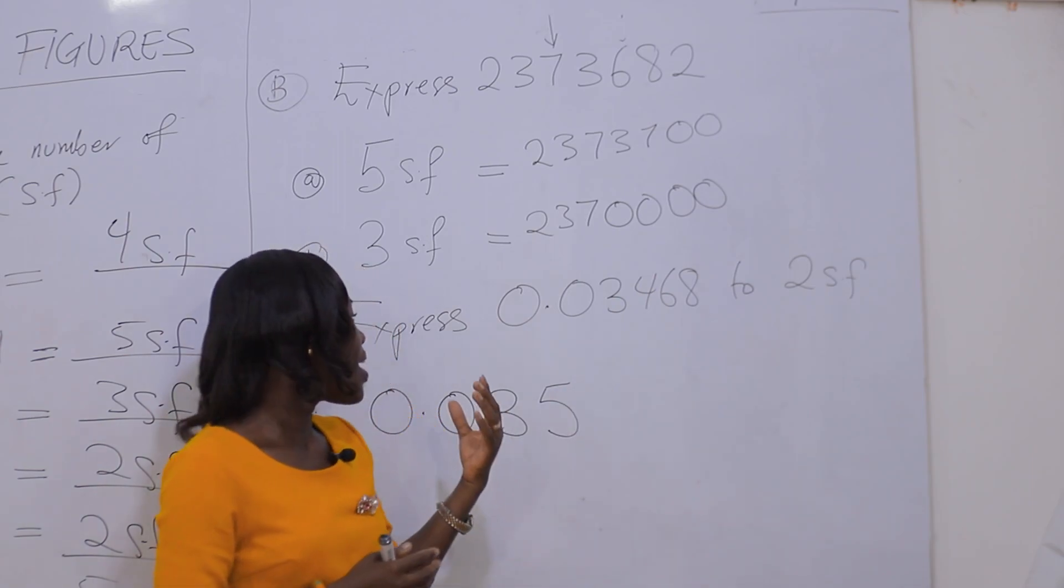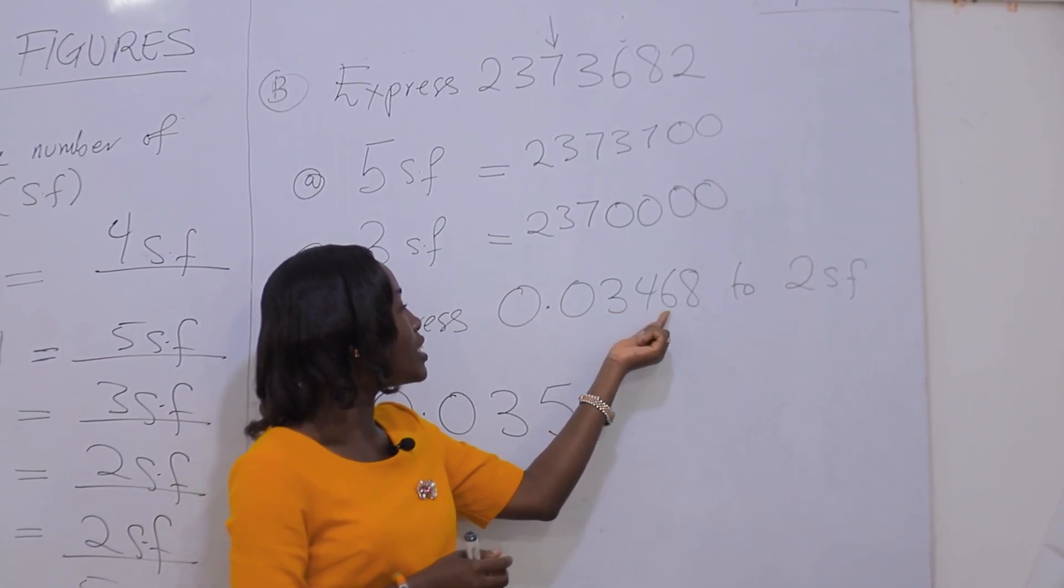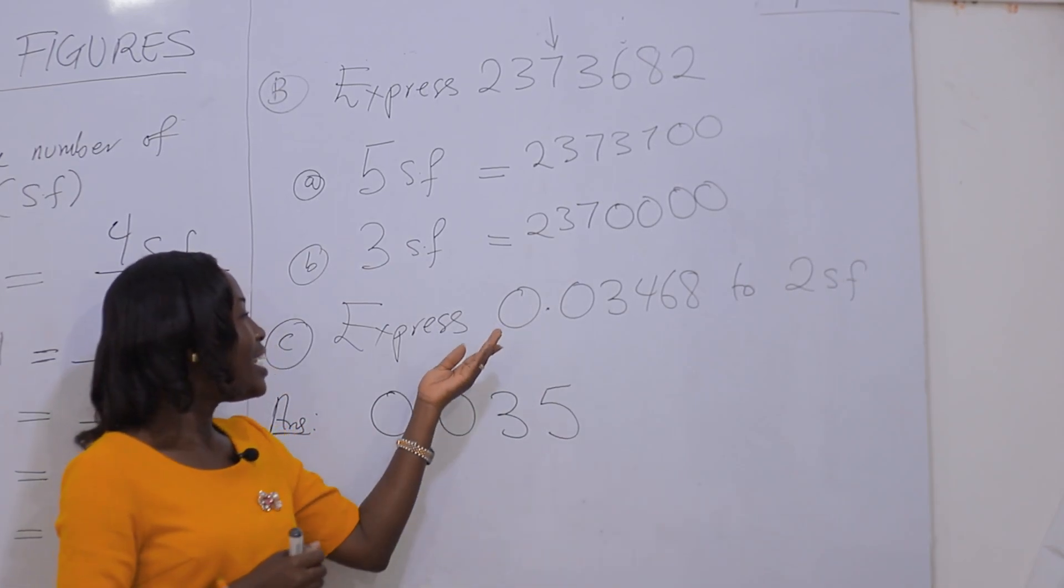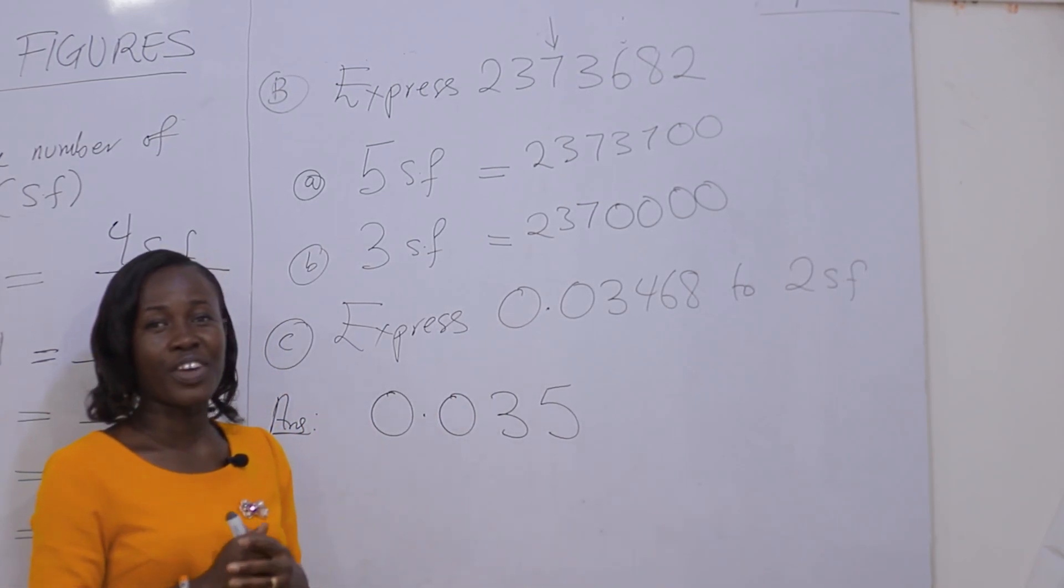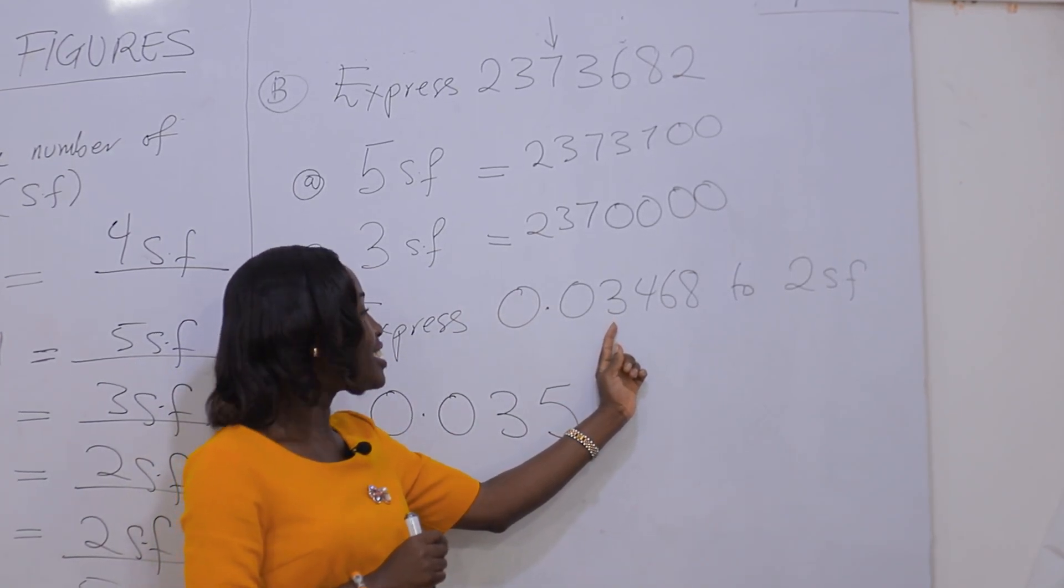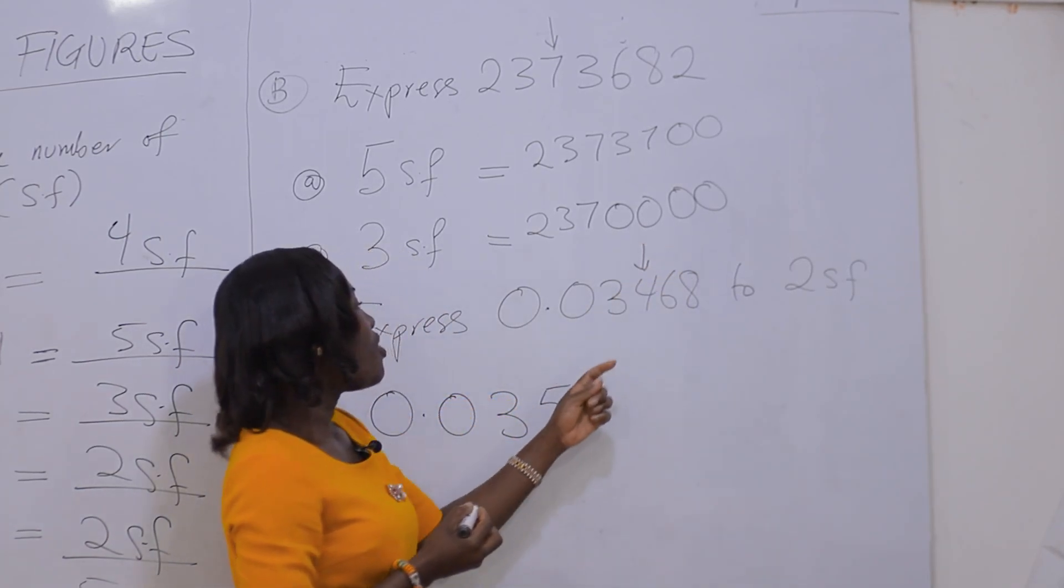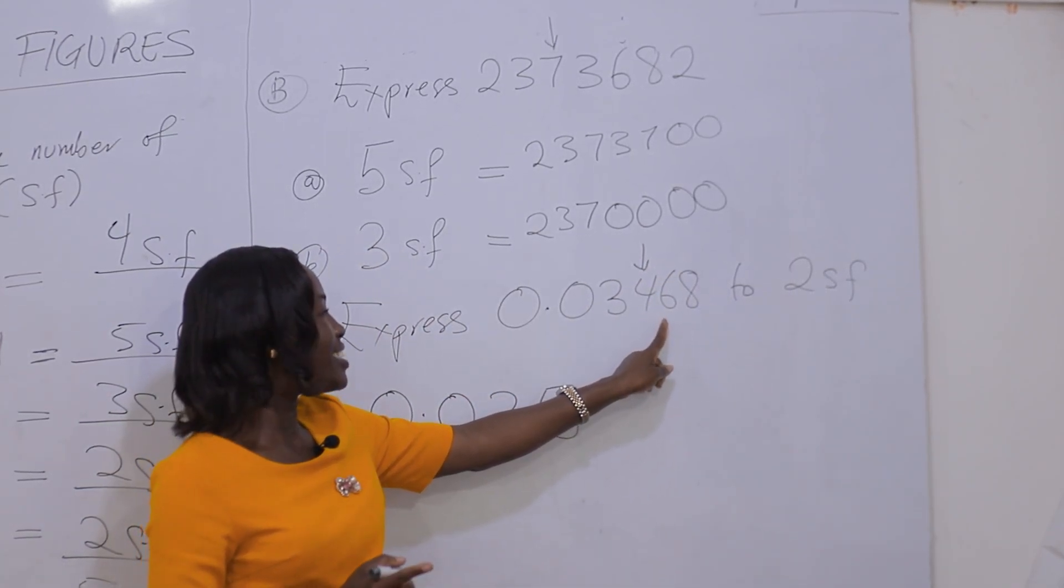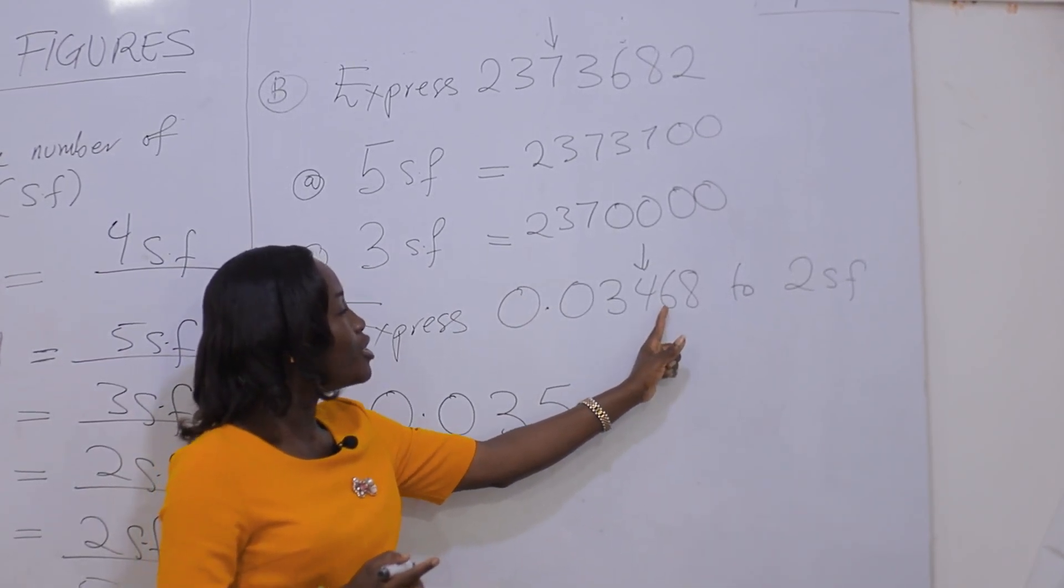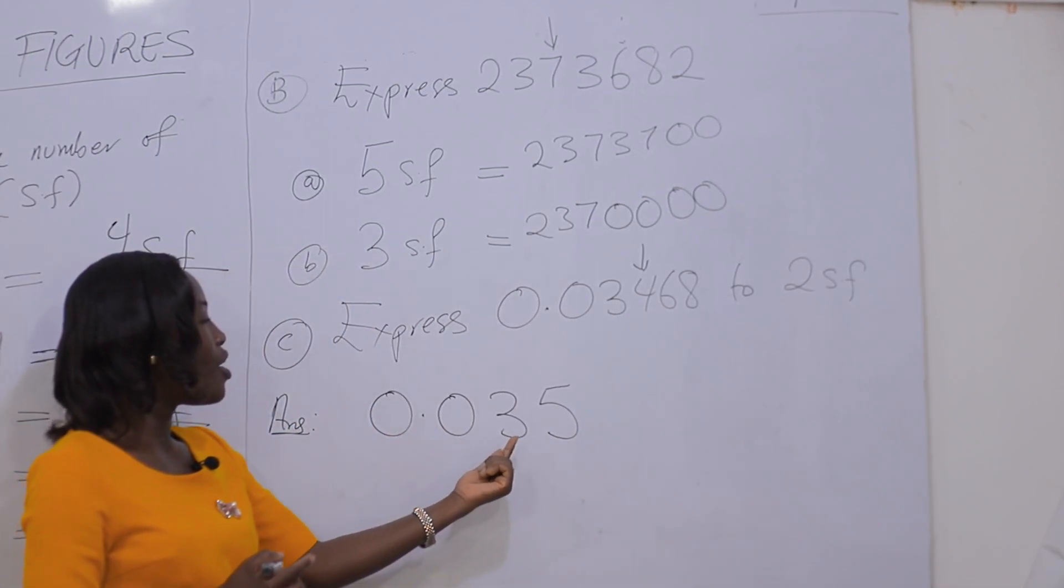For our next example, we are expressing 0.03468 to 2 significant figures. From our rules, leading zeros are insignificant. And so our first significant figure will be 3 and our second will be 4. Then we consider the next number on the right, which is more than 5. We round it up and add 1 to 4, giving us 0.035.